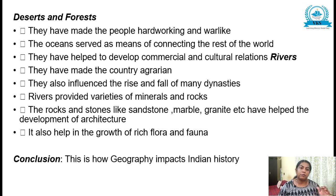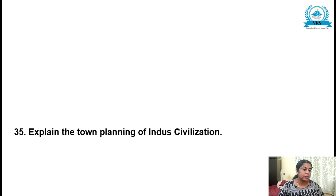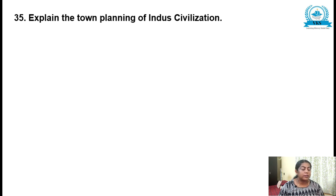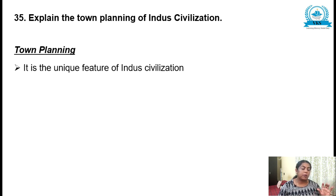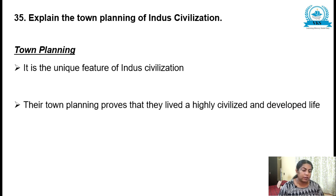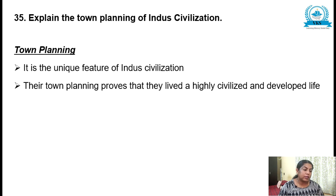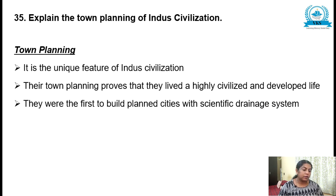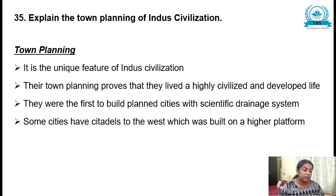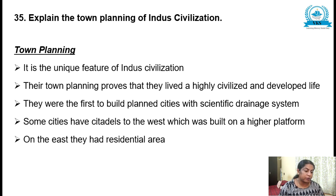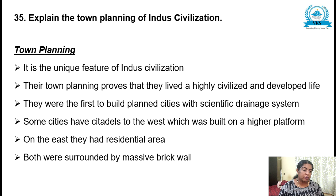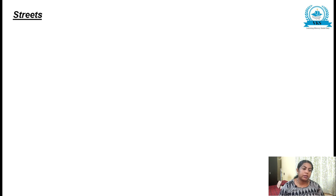Now the next question, 35th question: explain the town planning of Indus civilization. For the introduction write: it is a unique feature of Indus civilization; their town planning proves that they lived a highly civilized and developed life. They were the first to build planned cities with scientific drainage. Some cities had citadels to the west built on a higher platform; on the east they had a residential area, both surrounded by massive brick walls.